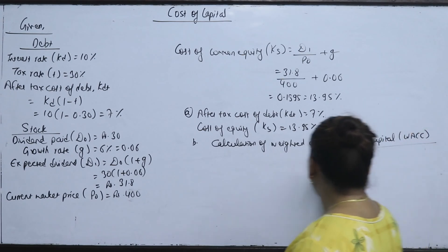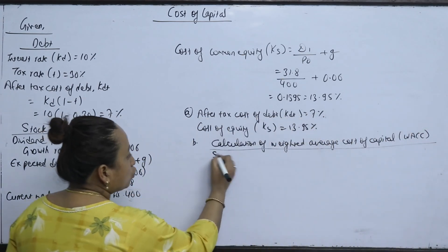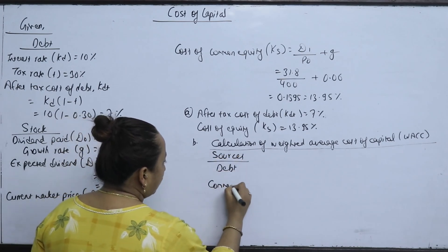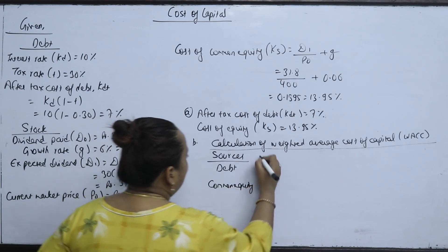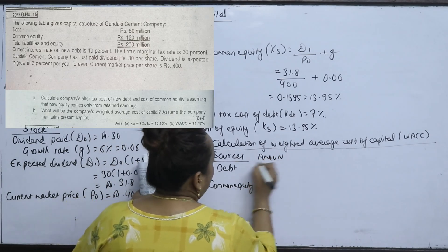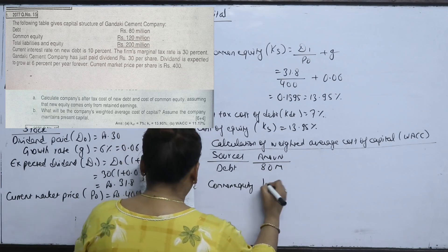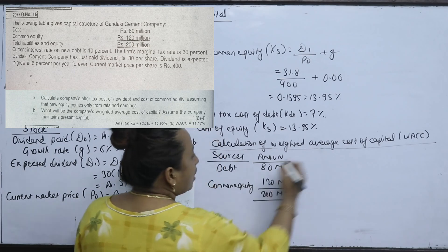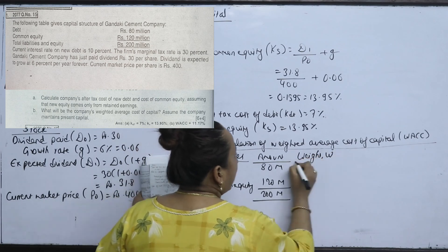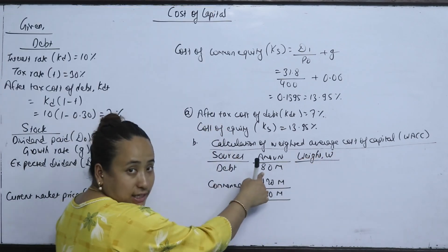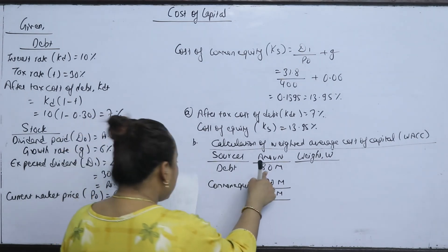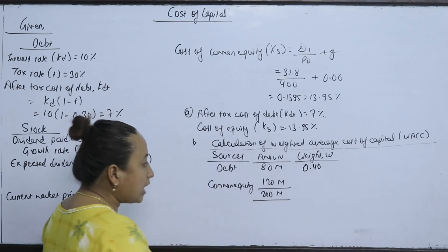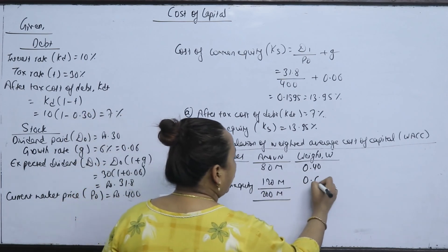WACC calculation: the sources are debt of 80 million and common equity of 120 million, totaling 200 million. The weight of debt is 80 divided by 200, which is 0.40, and the weight of equity is 120 divided by 200, which is 0.60.